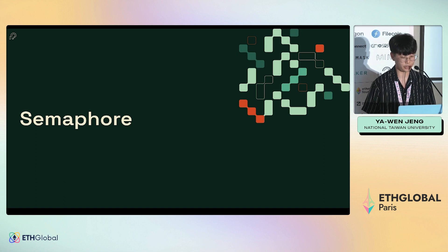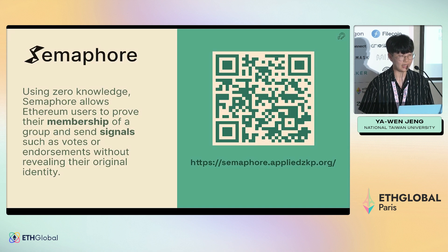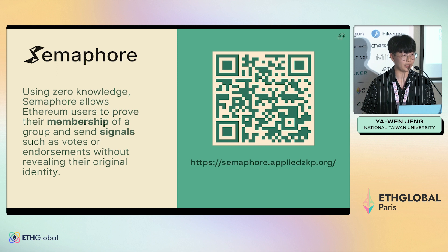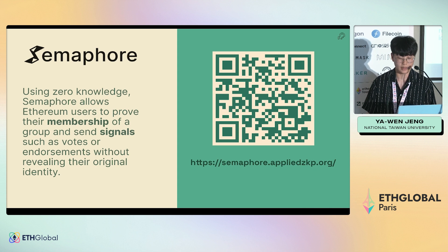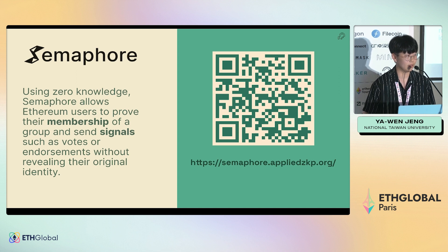I'm going to introduce the first project called Semaphore. Semaphore is like an identity system — you can generate an identity and then generate a membership proof of a group. You can also include a signal in the proof, such as to vote or endorse some information. There is a Semaphore website where you can get started more easily.